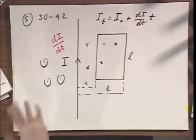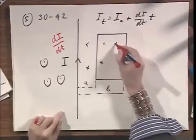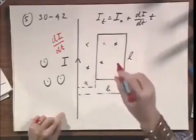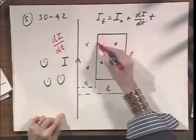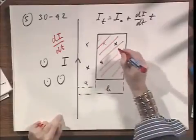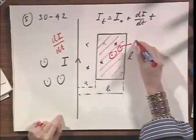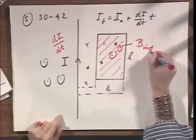Lenz's law, Faraday's law says, I don't like that. I don't like this magnetic field in the paper to grow. I don't like the magnetic flux through this surface to grow. And so what does it do? It creates a B-induced in this direction.